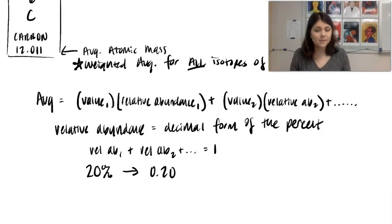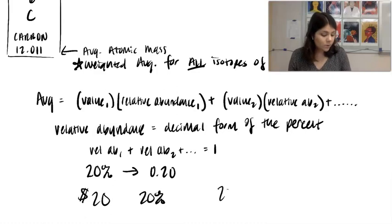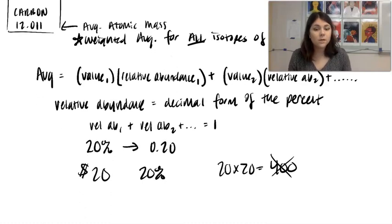So why do we have to put into a relative abundance form? I like to use this example. So let's say you go out to dinner and it's 20 bucks and you want to tip the waitress 20%.